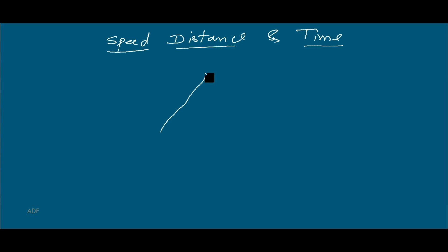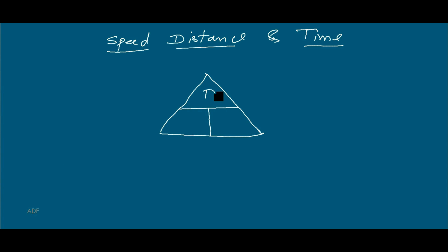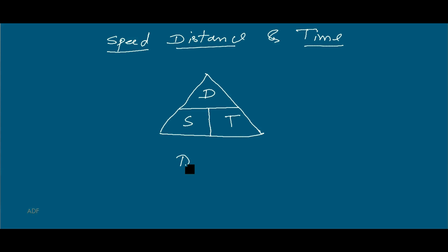As you can see in the diagram that I have drawn — to keep in your memory the formula of speed, distance and time — I created this triangle. If I write D here for distance, S for speed, T for time, then very easily it can be written that distance equals S into T. Speed and time have a multiply relation.